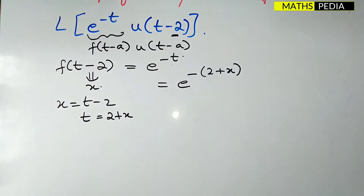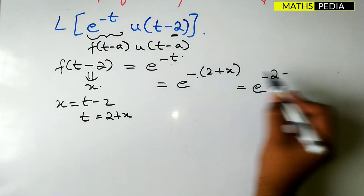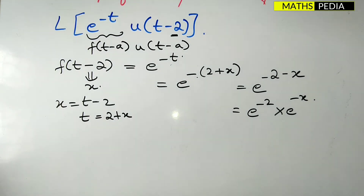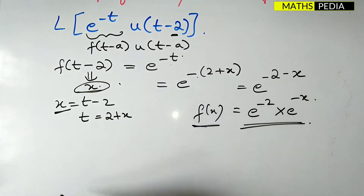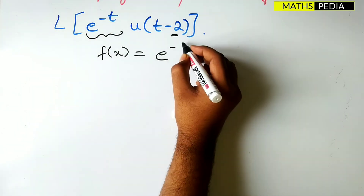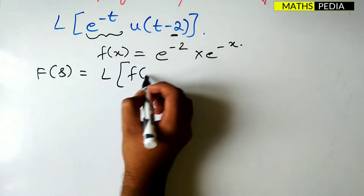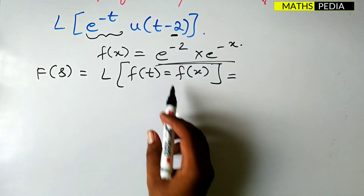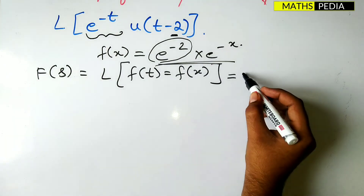Replacing t with (2 + x) in e^(-t): we get e^(-(2+x)) = e^(-2)·e^(-x). So f(x) = e^(-2)·e^(-x). Now we need to find capital F(s), the Laplace transform of f(x). Here e^(-2) is a constant, so we write it as-is and find the Laplace transform of e^(-x).